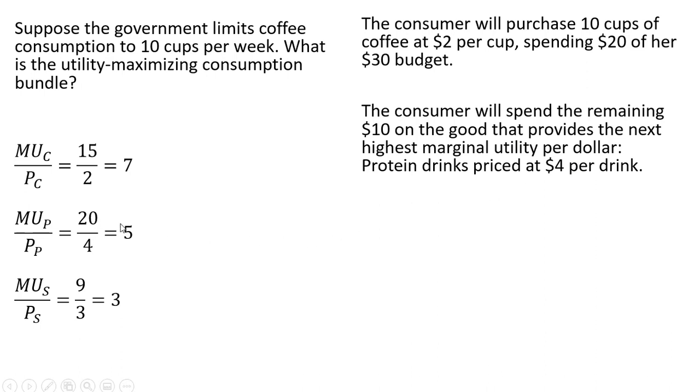The consumer will spend the remaining $10 on the good that provides the next highest marginal utility per dollar, which is protein drinks. With $10 left over and protein drinks costing $4 each, you'll be able to buy 2.5 protein drinks.